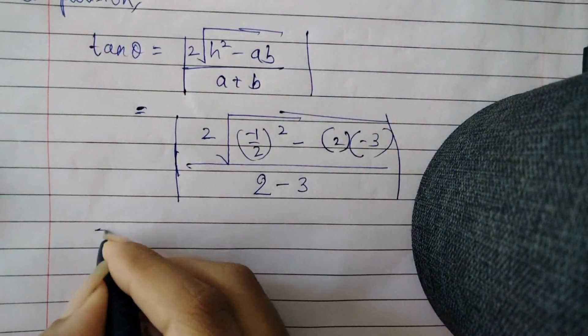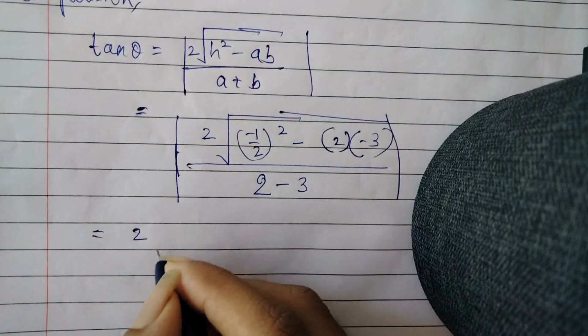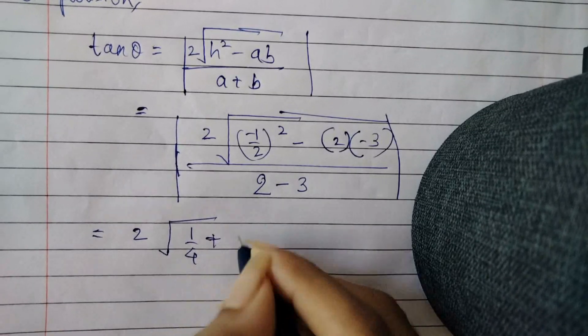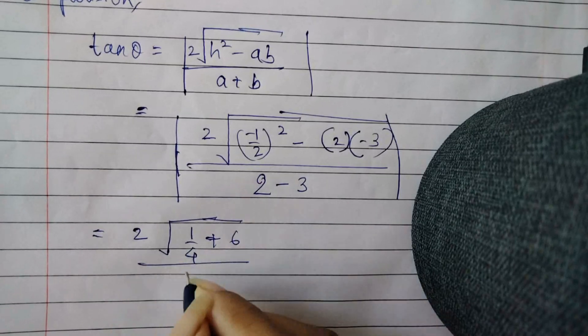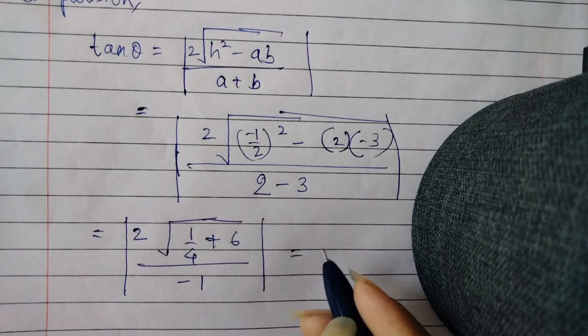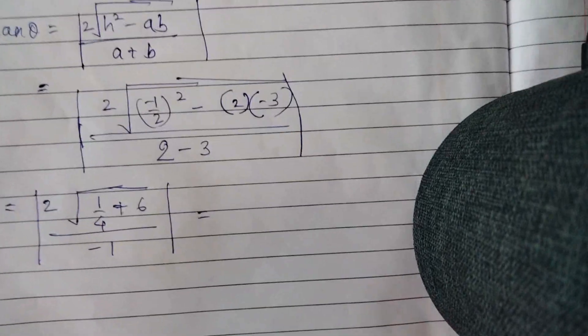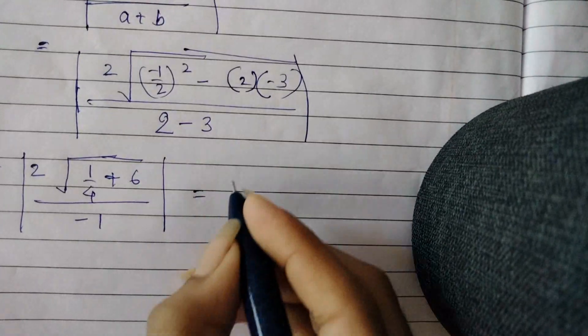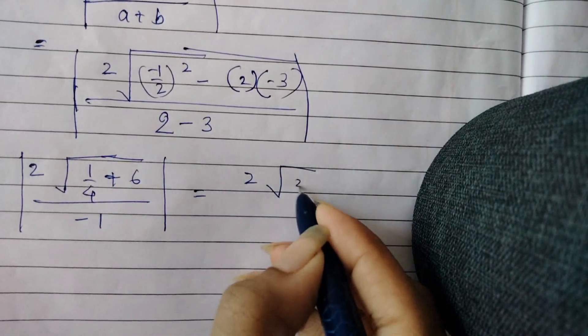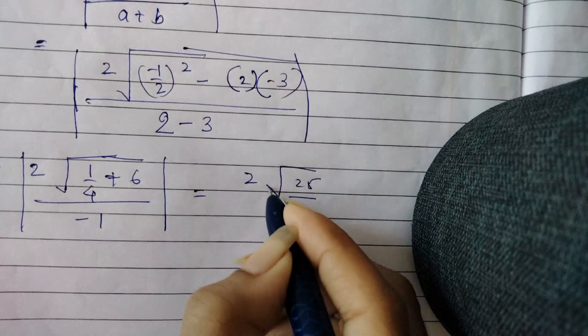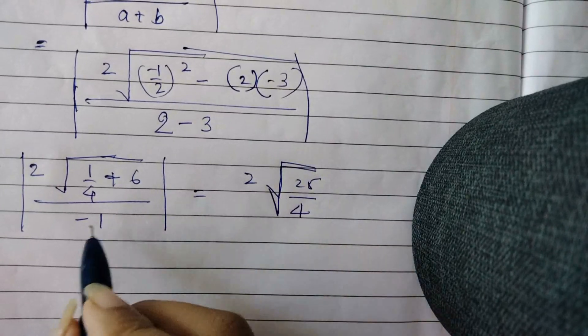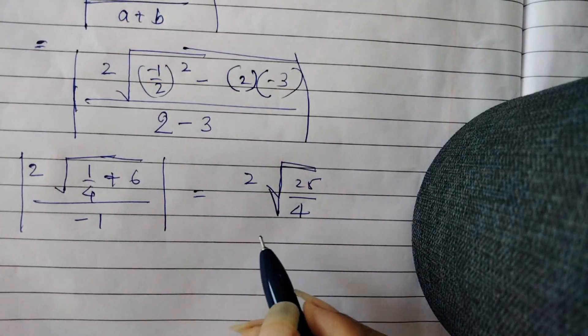So this will be 2√(1/4 + 6)/|-1|. Taking LCM within the under root is equal to 2, 6 fours are 24 plus 1, 25/4. And -1 after removing the mod will become +1.